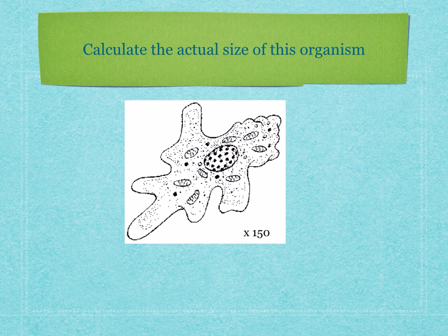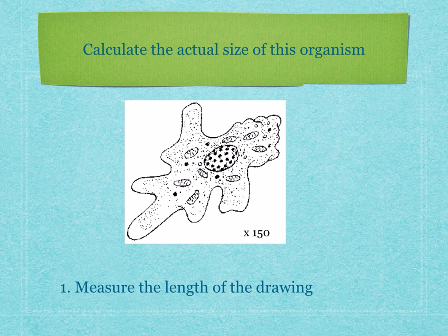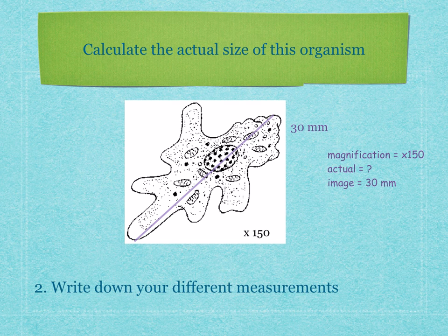Let's have a look at how to calculate the actual size of an organism. Here, you've got an organism that's been magnified 150 times, and you need to find out what the actual size is. The first step is you measure the length of the drawing — for example, we find it to be 30 millimeters. The second step: write down the measurements — magnification equals times 150, actual equals question mark, and image equals 30 millimeters.